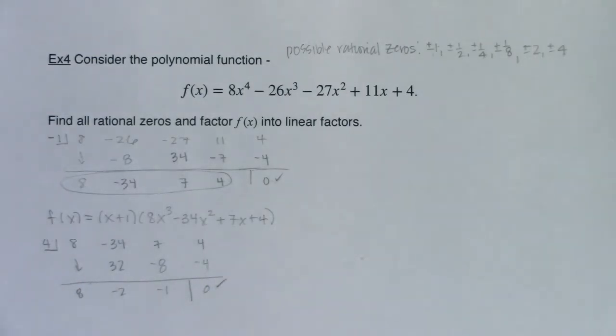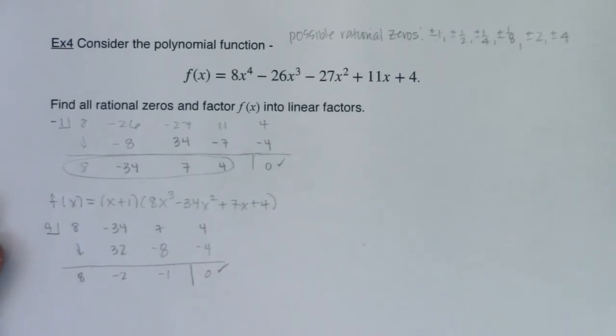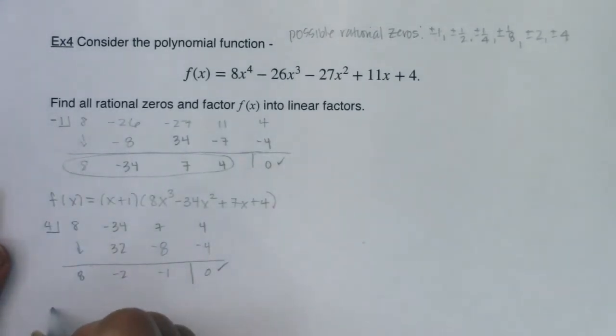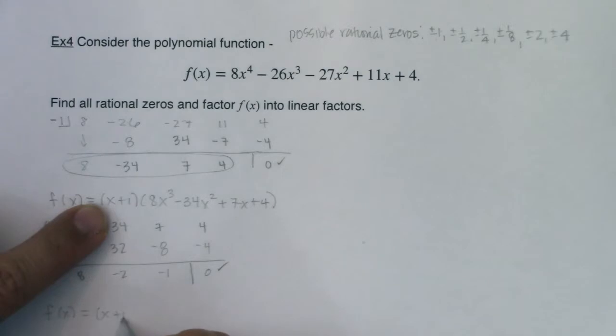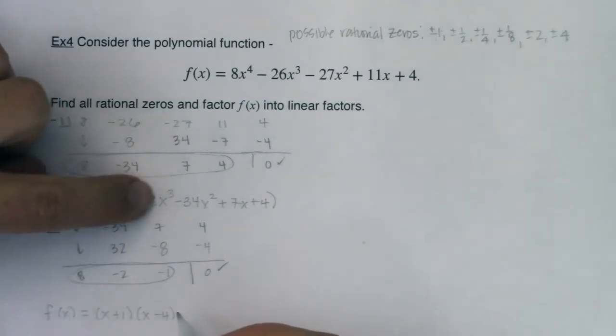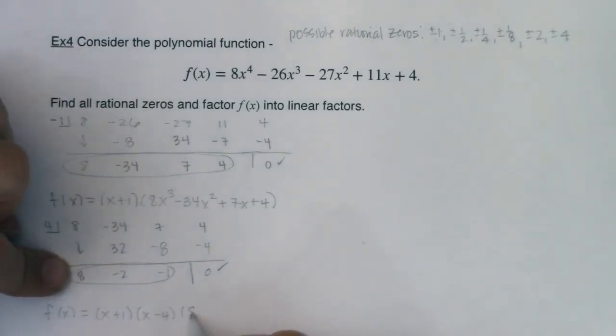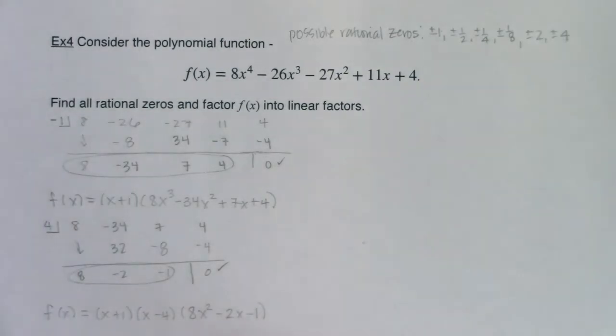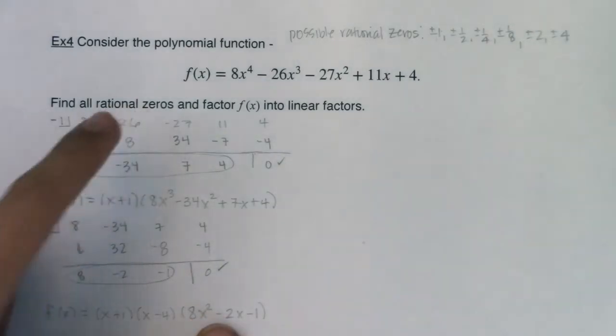For my original function, I knew x plus one was a factor. I just picked up x minus four. And here's my remaining factor. Now I was breaking down a cubic, so now I need to start with a squared. So this is 8x² - 2x - 1. And why I can get excited is because when I get here, when I've broken it down to a quadratic, then I have, once you have a quadratic, you know that you could factor it, you could complete the square, you could use the quadratic formula. So I can find all of my zeros.